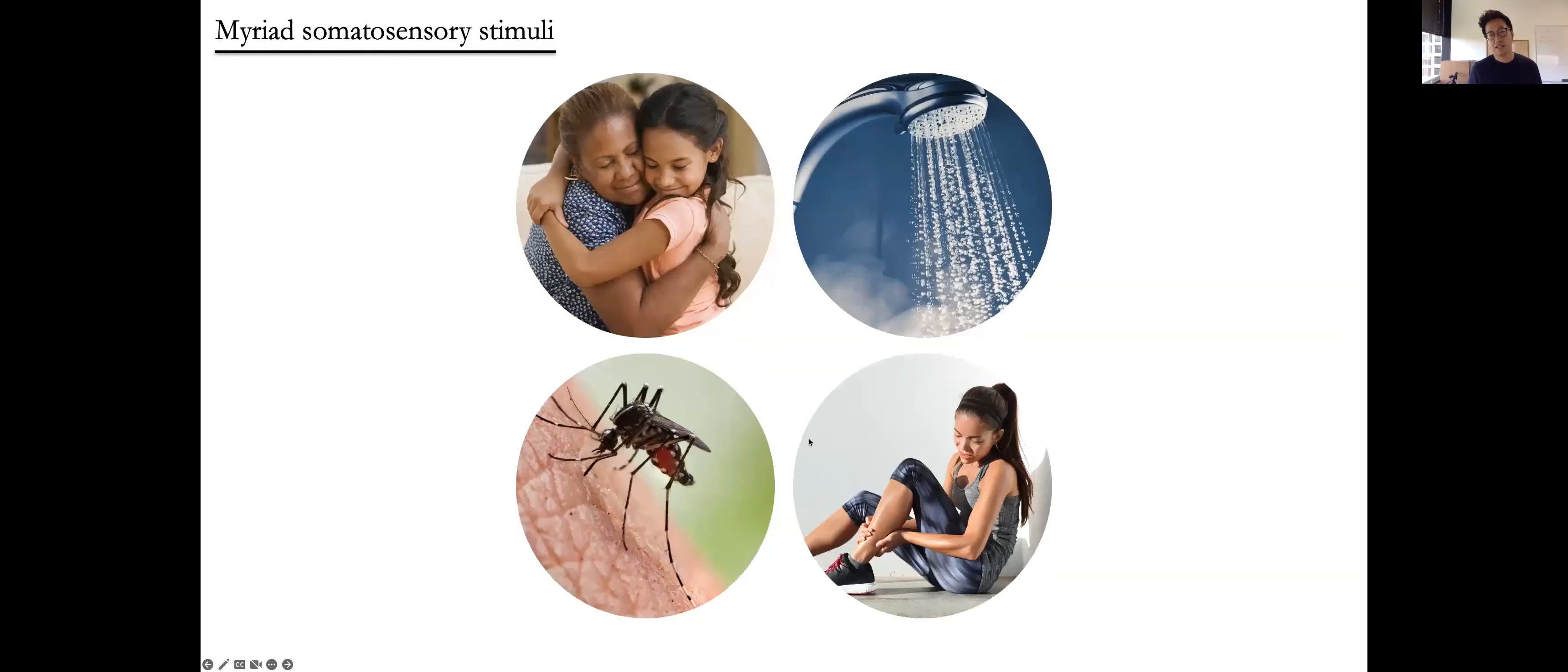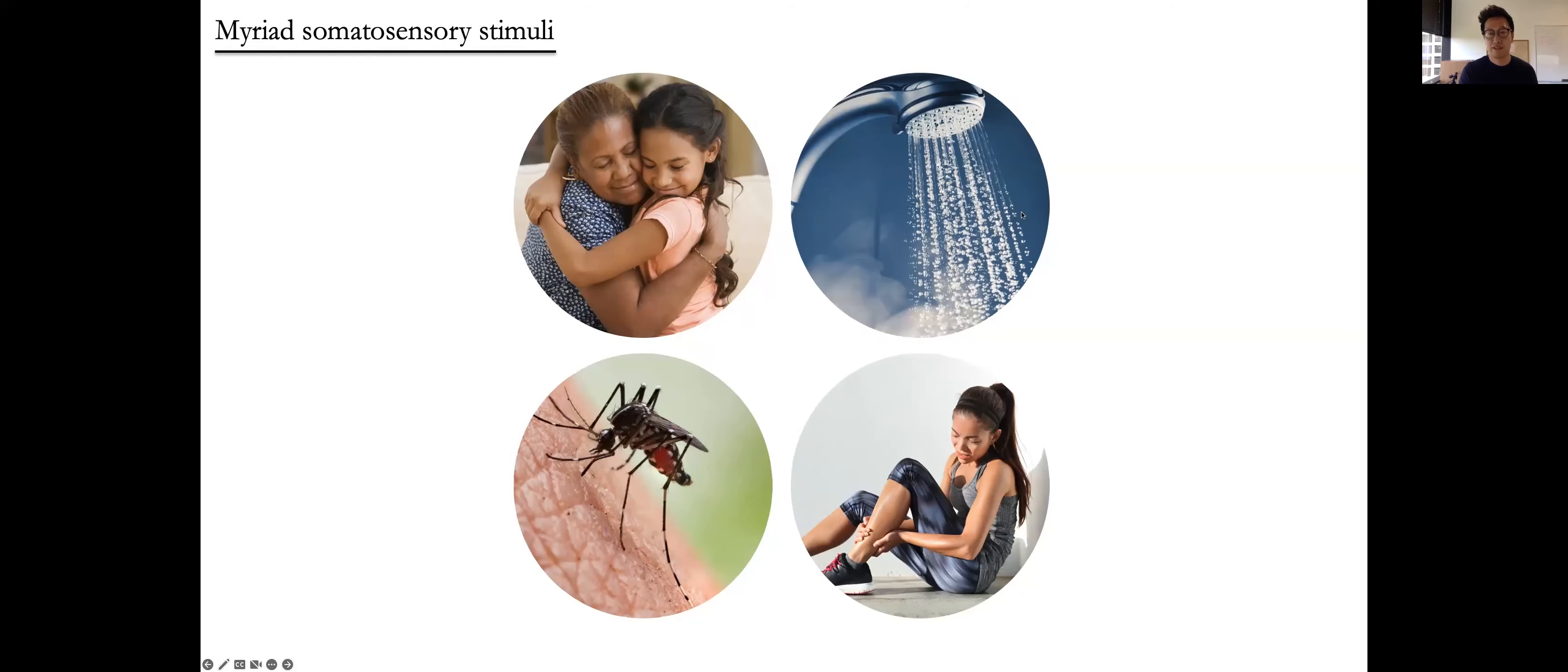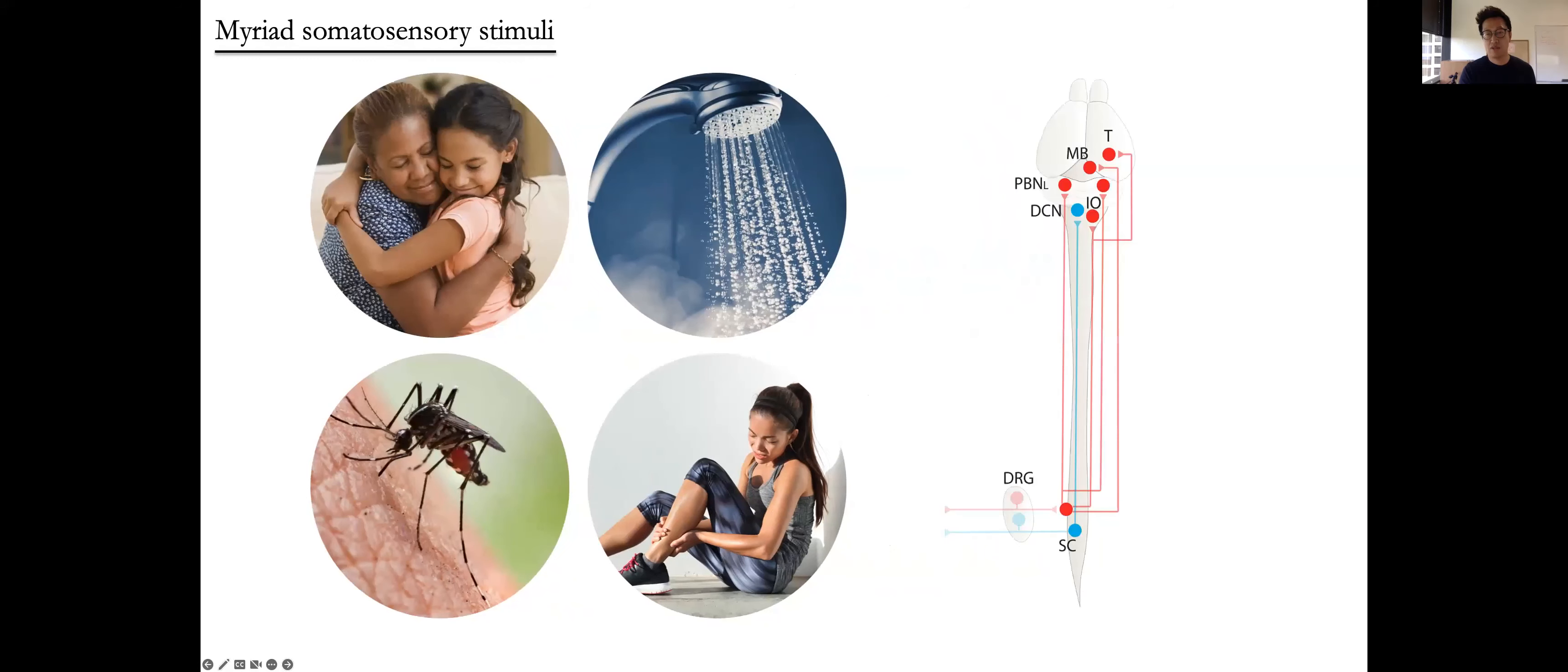Every day, we experience myriad somatosensory stimuli through our skin, not just hugs from loved ones, but also warm showers, mosquito bites, and sore muscles after a workout. All these tactile, thermal, itch, and nociceptive signals are detected by peripheral sensory neurons, then propagated into the spinal cord and transmitted to the brain through ascending spinal pathways.